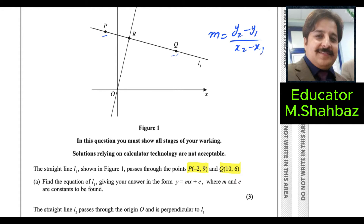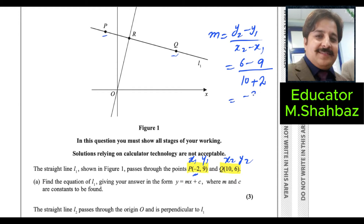First find the gradient. At this level, you identify x1, y1, x2, y2 and substitute the values. Substituting gives 6 minus 9 divided by 10 minus negative 2 — the two negatives make a plus — so you get negative 3 over 12, which simplifies to a gradient of minus 1 over 4.